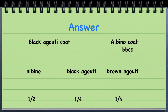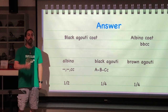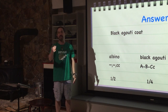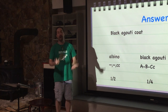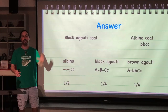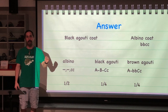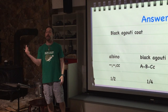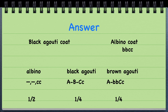Looking at the offspring genotypes: the albino is clearly homozygous recessive for the C gene. The black agouti must have a dominant allele for the A gene, a dominant allele for the B gene, and a dominant allele in the C gene — and must be heterozygous for the C gene because the albino parent could only pass on a recessive allele. The brown agouti must have at least a dominant allele for A, be homozygous recessive for B, and be heterozygous for C for the same reason.